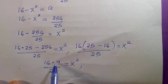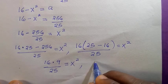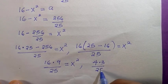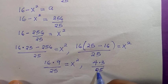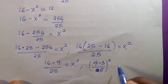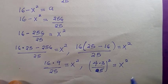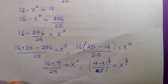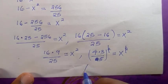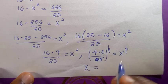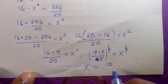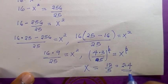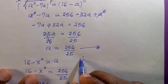So we have 16 times 9 divided by 25 equals x squared. All of these are perfect squares, which can be reduced to 4 times 3 divided by 5, all squared, following the rules of indices. The square cancels the square, and we get x equals 4 times 3 divided by 5, that is 12 divided by 5, which equals 2.4. And 2.4 is the solution to this problem.